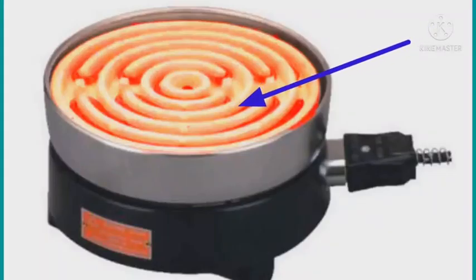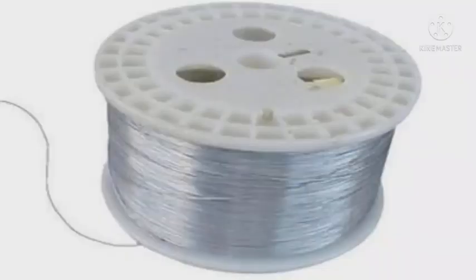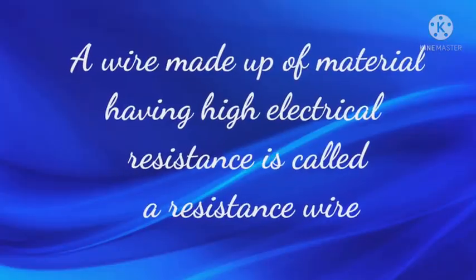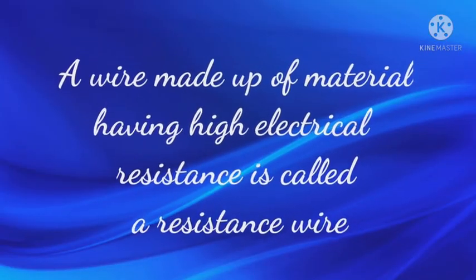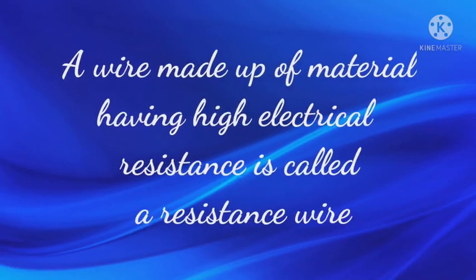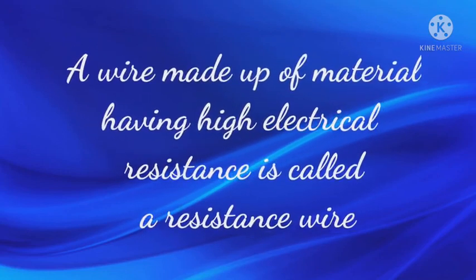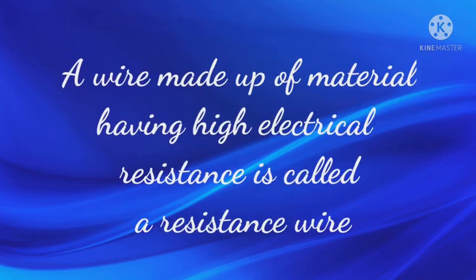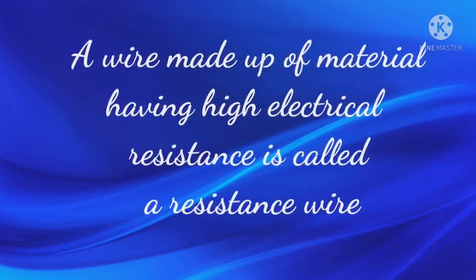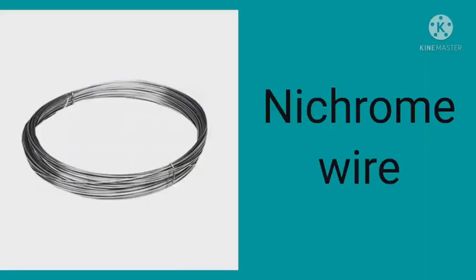Nichrome is an alloy of nickel, chromium, iron and manganese. Remember students, a wire made up of material having high electrical resistance is called a resistance wire. Thus, we can say nichrome wire is a resistance wire and because of this property,